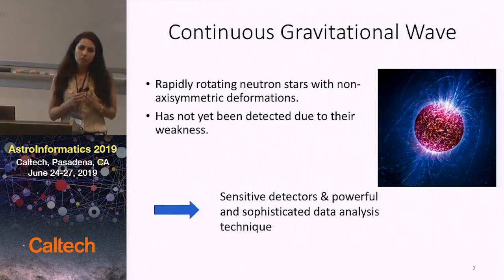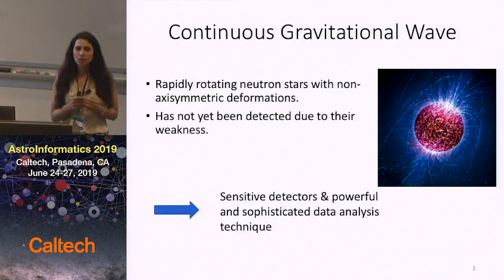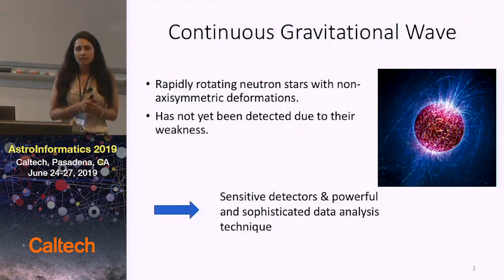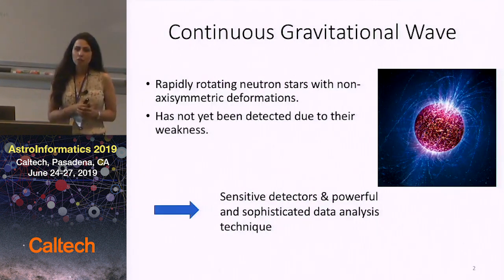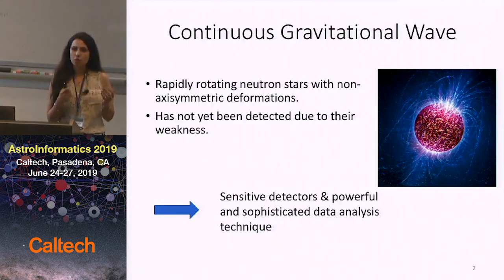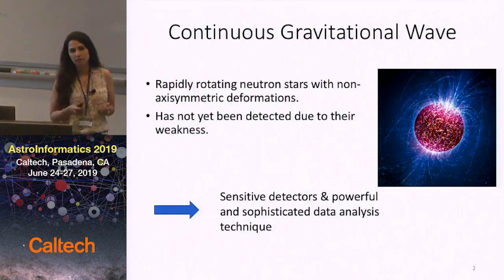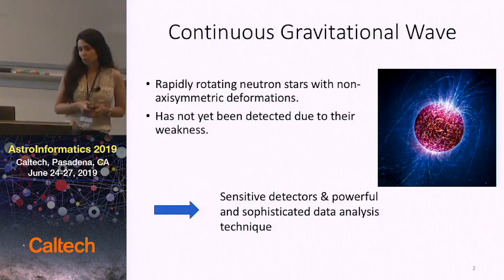These waves are about five orders of magnitude weaker than the ones that have been observed before for binary mergers, and that's why we haven't yet observed this gravitational wave. We would need more sensitive detectors and also more powerful data analysis methods to observe those.